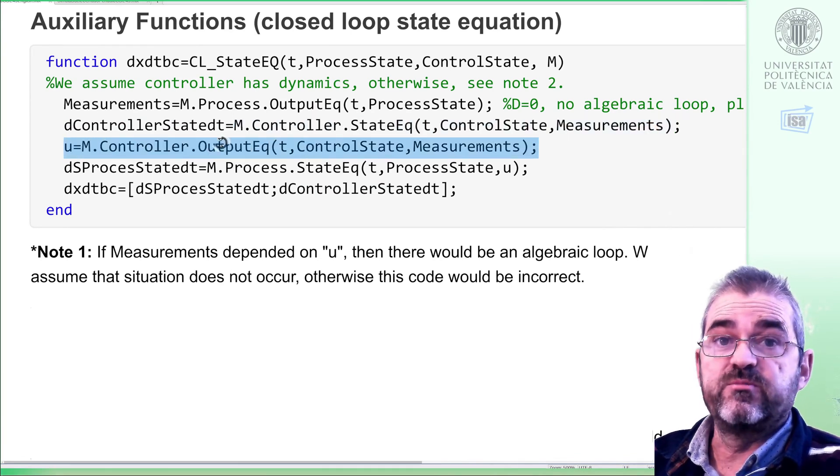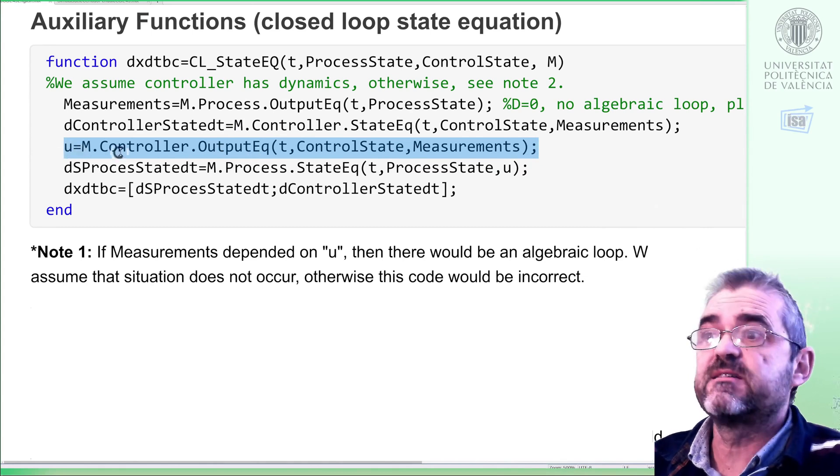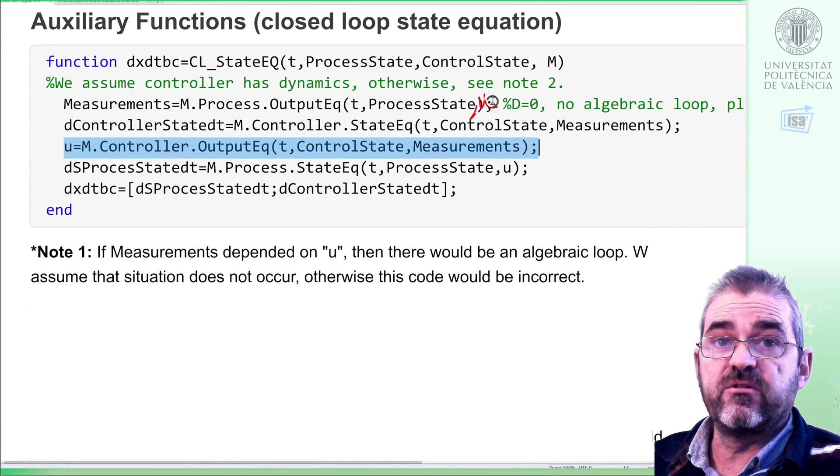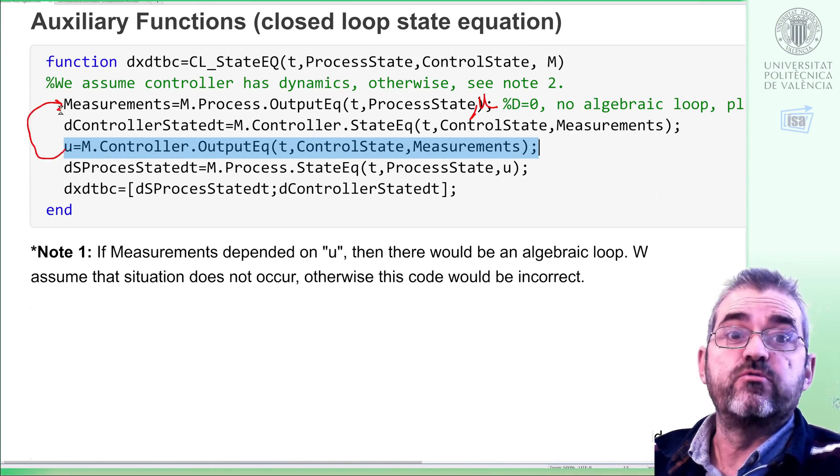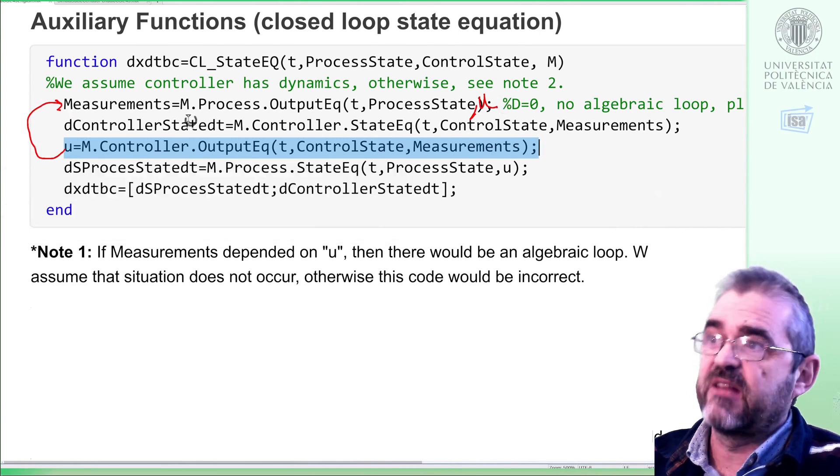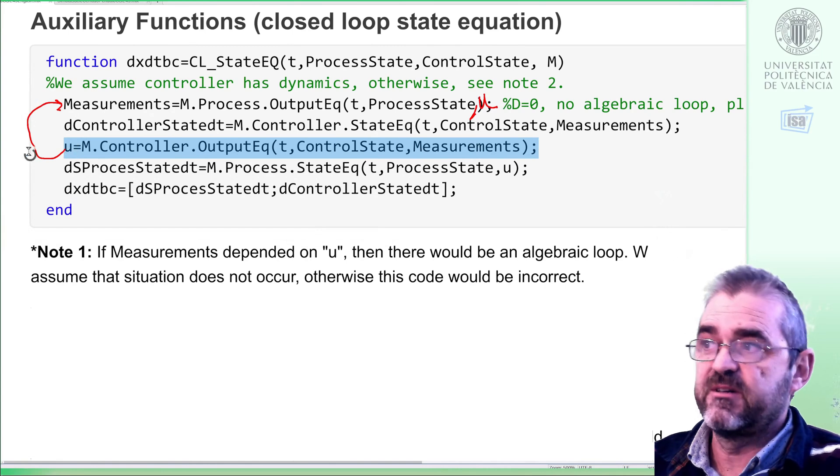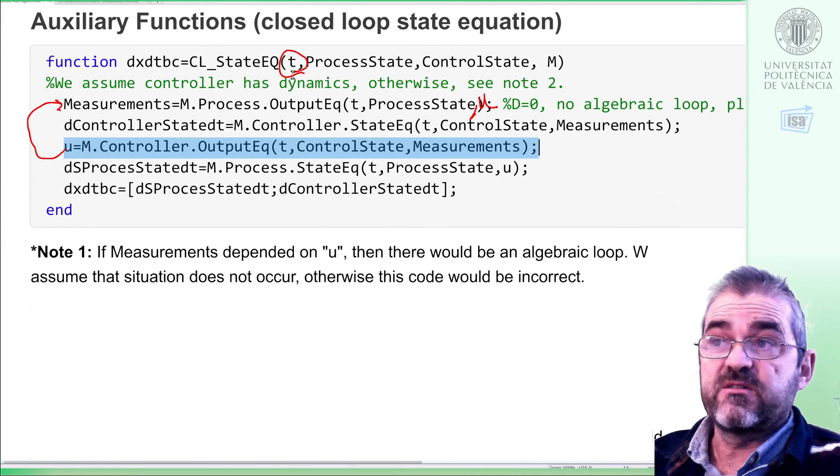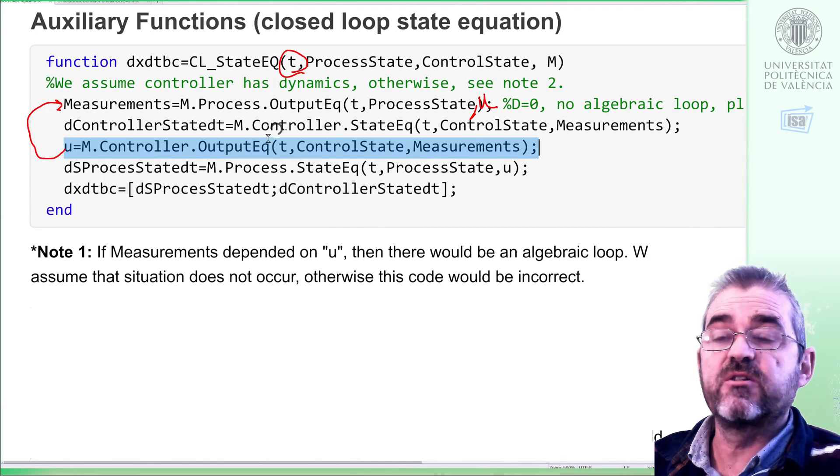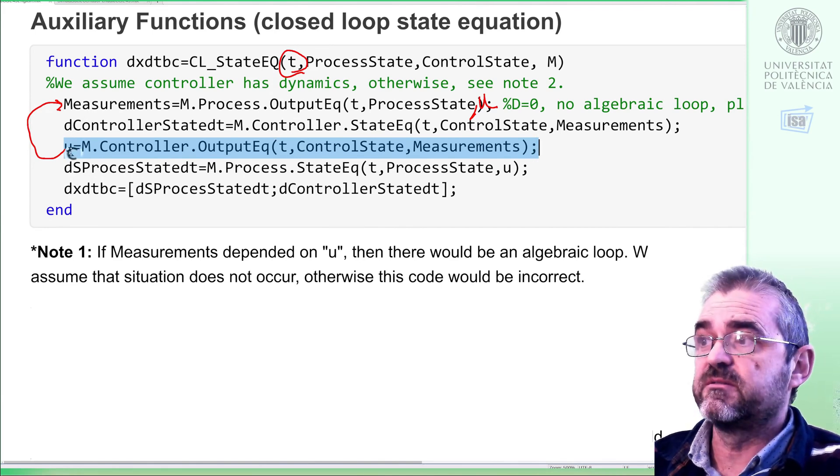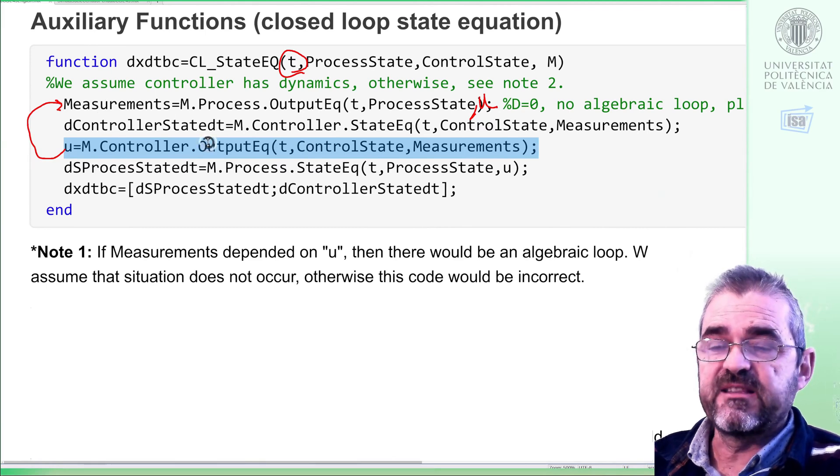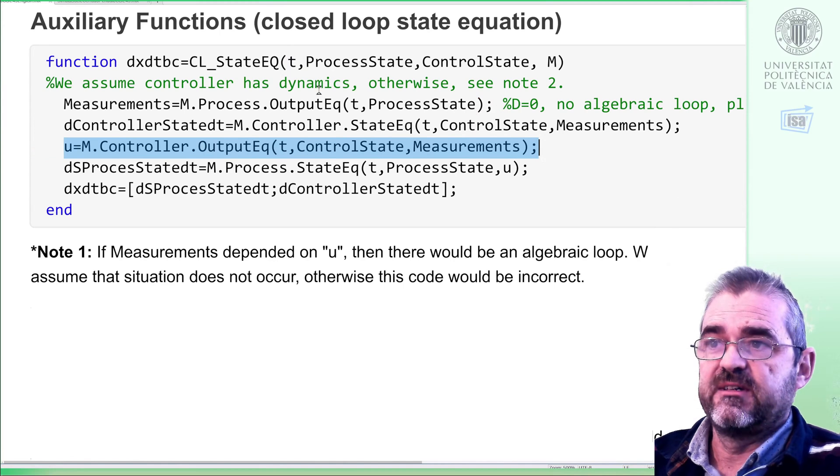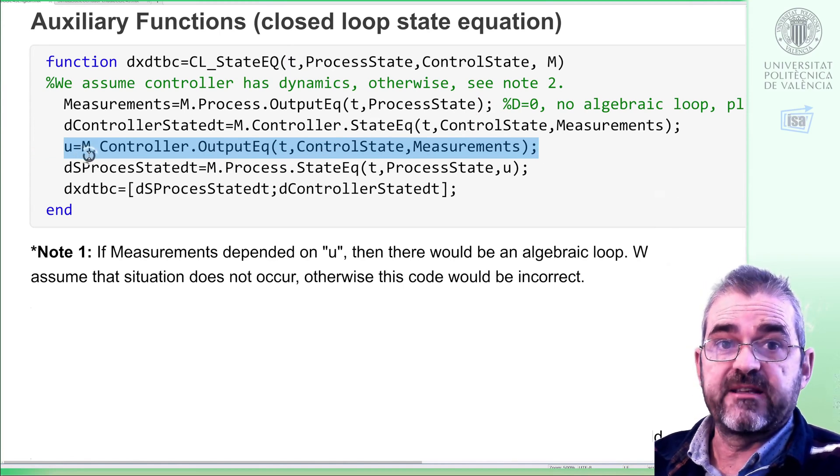Also, we evaluate the controller output, the manipulated variable, u or torque in this case, given the current control state and the current measurements. If the measurements depended also on u, then once I compute this u, I should compute the measurements again, and with these new measurements, I would compute a different u, and so I will have this kind of loop, everything happening at the same instant of time t. And this is what we call an algebraic loop. In that case, we will need some kind of algebraic equation solver to compute things here. But we will forget about that because we wish to keep things simple, and it's not needed in this pendulum simulation.